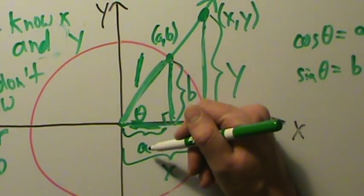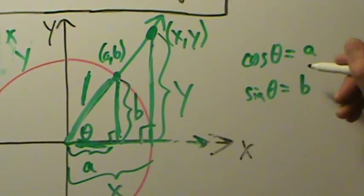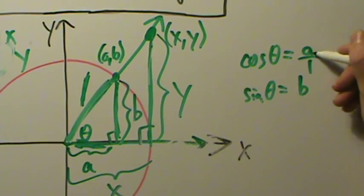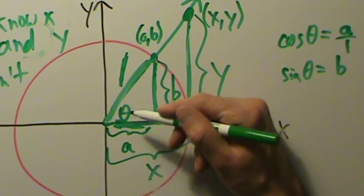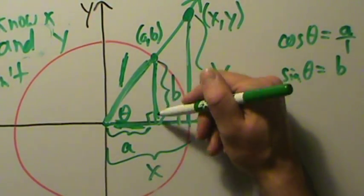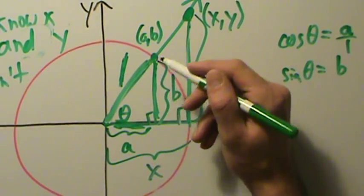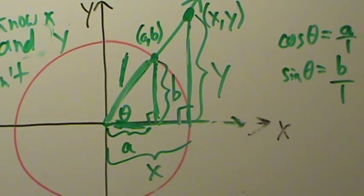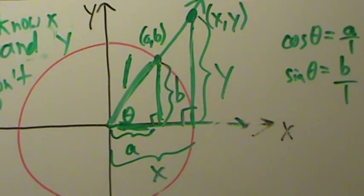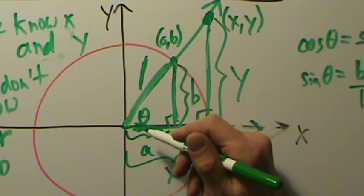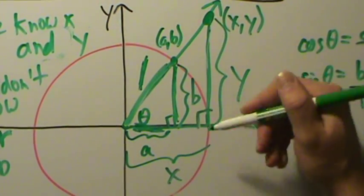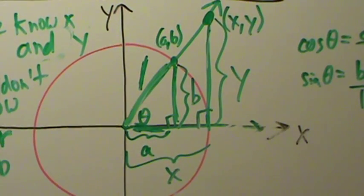Thinking about trig functions of theta using just this triangle: cosine of theta is adjacent over hypotenuse, which is A over 1. Sine of theta is opposite over hypotenuse, which is B over 1. Now, how do we express that in terms of x and y? We can think of it as adjacent over hypotenuse or opposite over hypotenuse for the larger triangle, or we can use similar triangles from geometry.